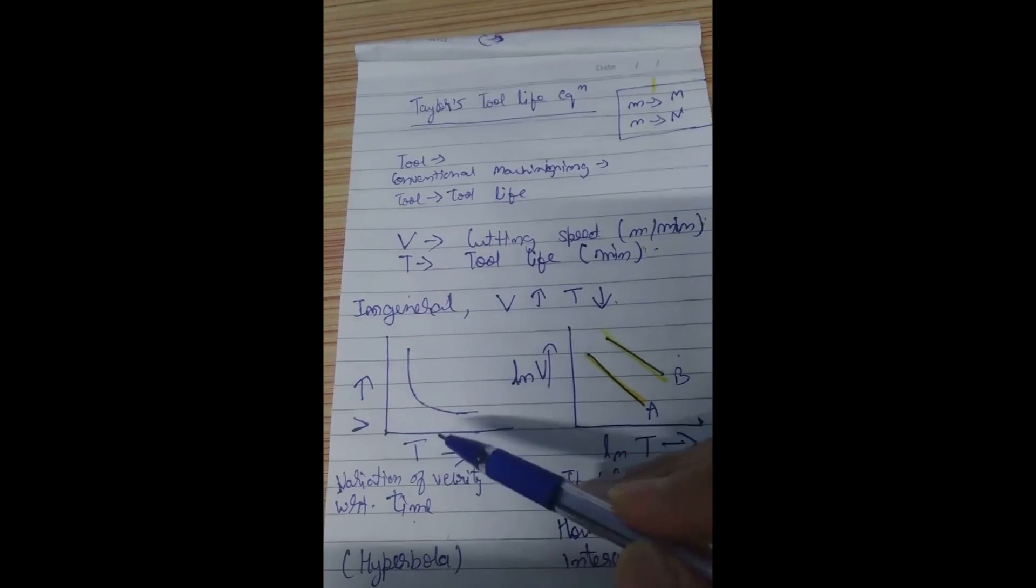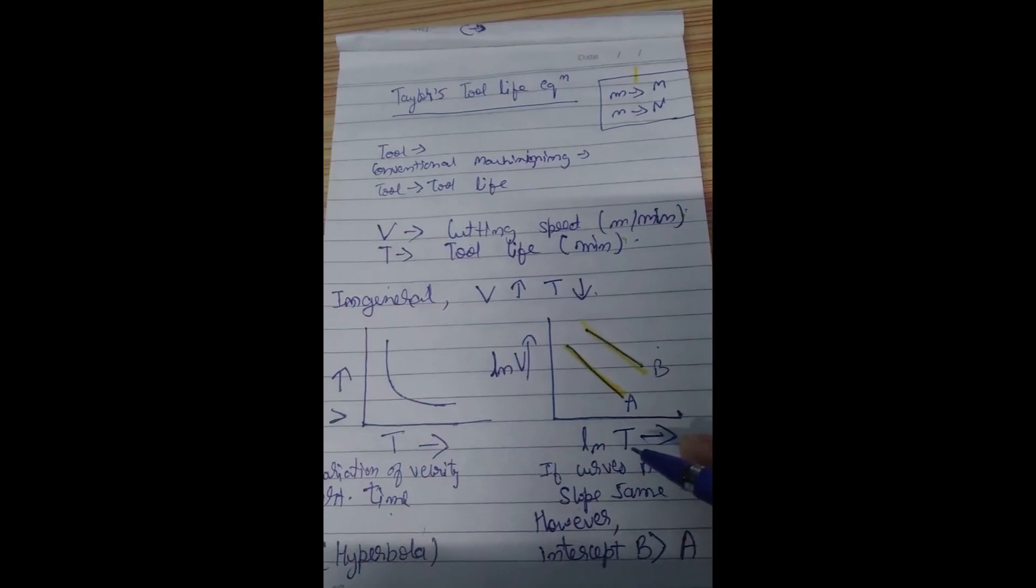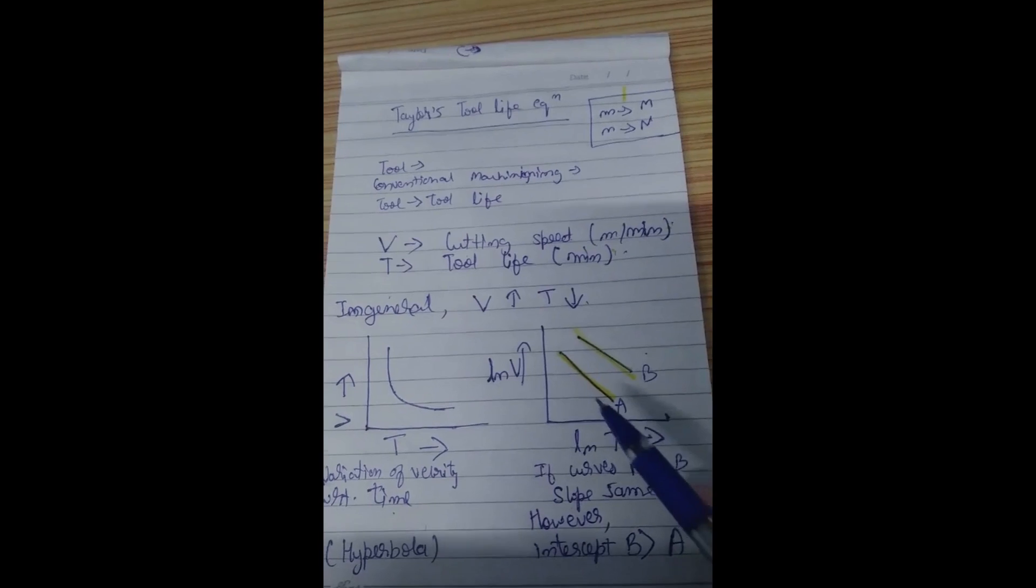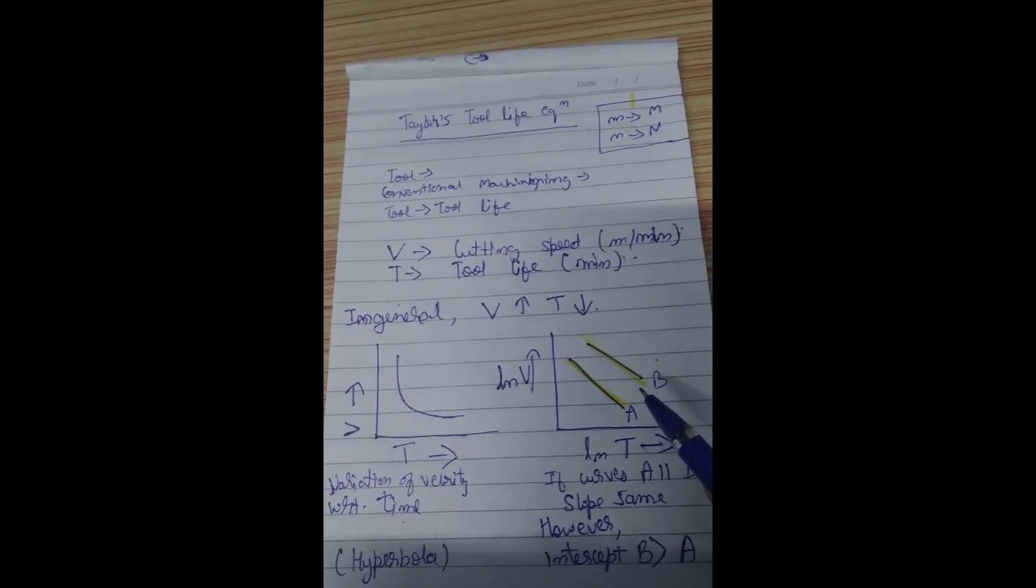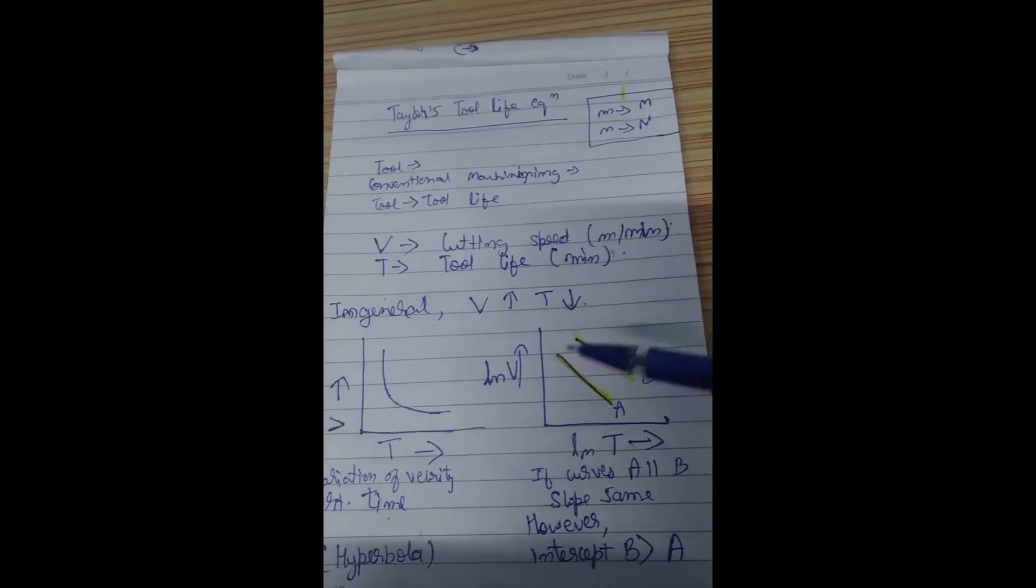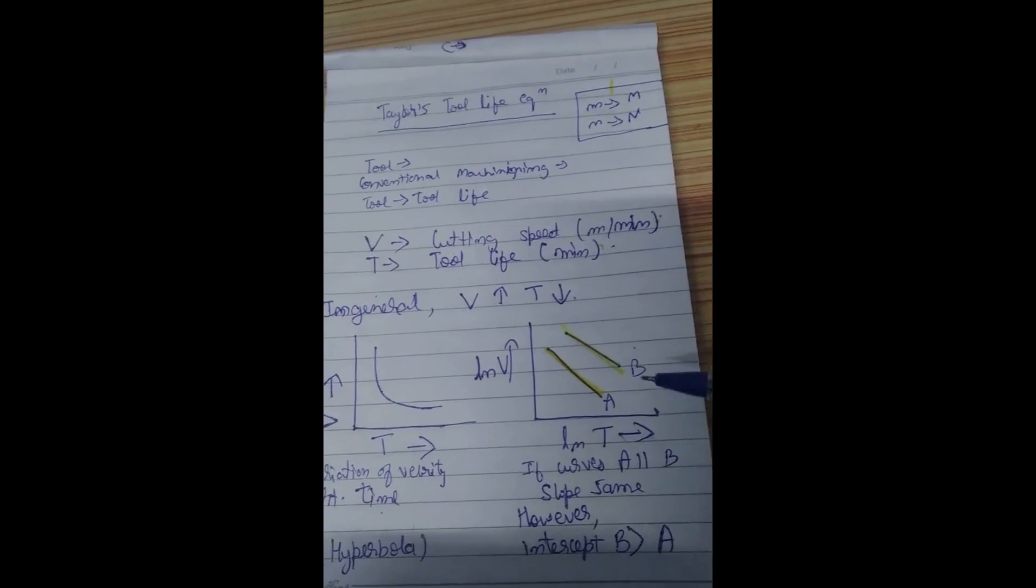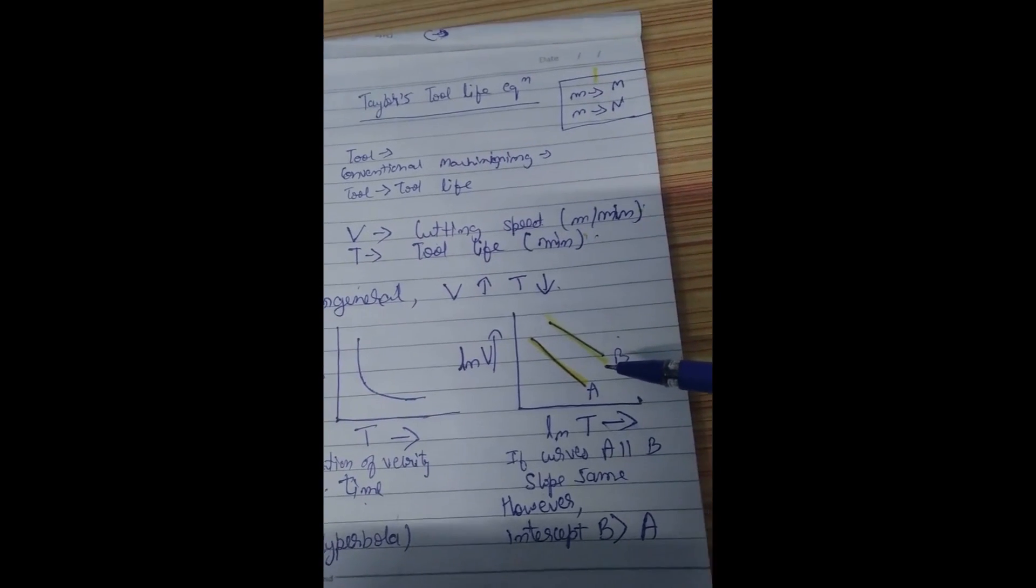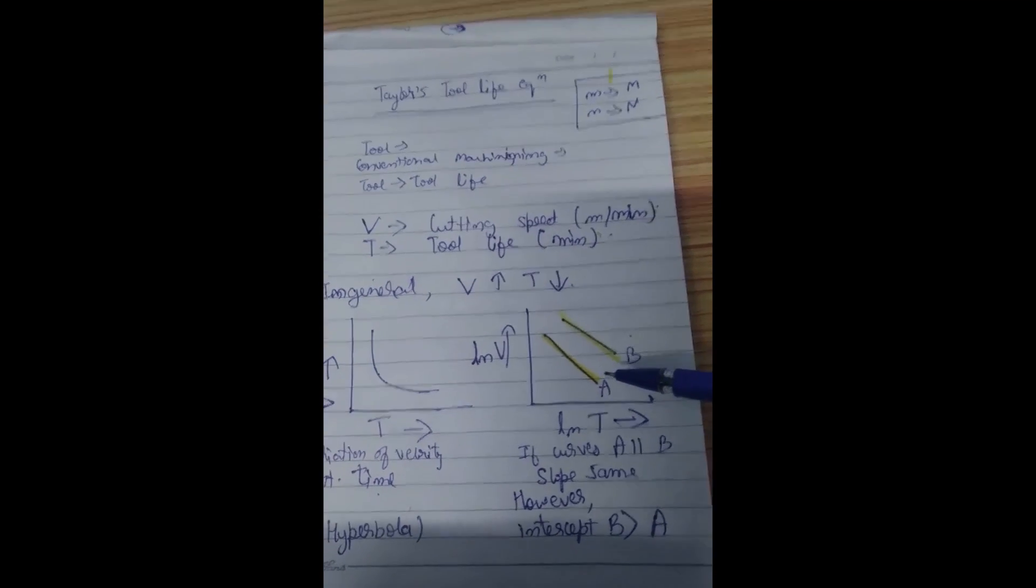And if we take the log of both sides, any log, natural log or the 10 base log, so log V and log T will show a straight line. I repeat, V and T will show a hyperbolic variation, whereas log of V and T will show the equation of a straight line. Let us recall the equation of the straight line: y equal to mx plus c, where c was the intercept and m was the slope, tan theta.